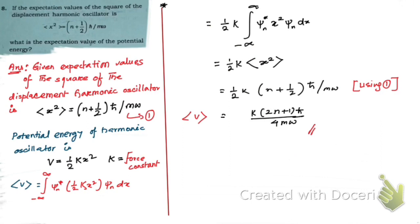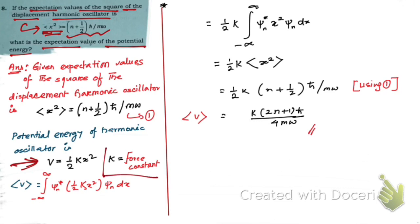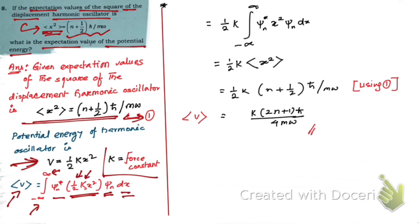Question number eight: the expectation value of the square of the displacement of the harmonic oscillator is given by a known expression. We need to find the expectation value of the potential energy. The potential energy of the harmonic oscillator is V = ½kx², where k is the force constant. The expectation value of potential energy ⟨V⟩ is given by the integral from minus infinity to plus infinity of ψ_n* · ½kx² · ψ_n dx. Since ½ and k are constants, they can be taken out.